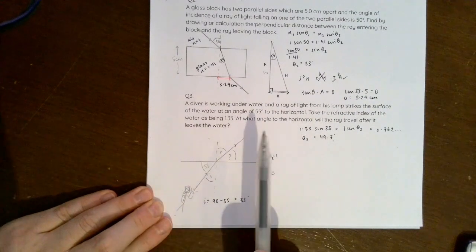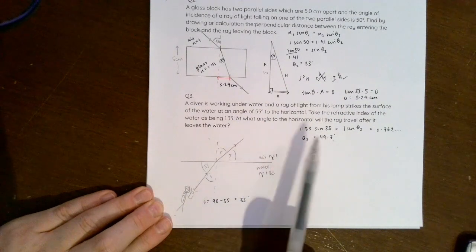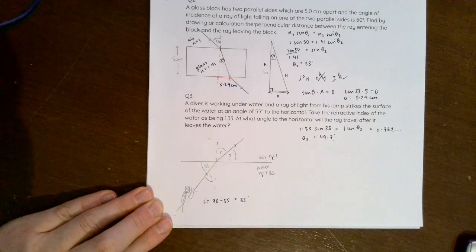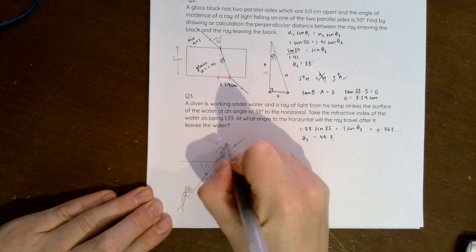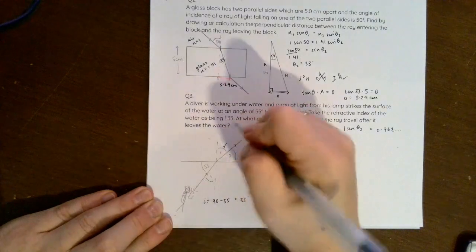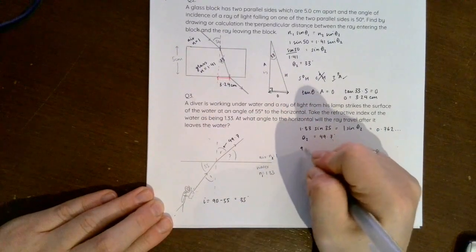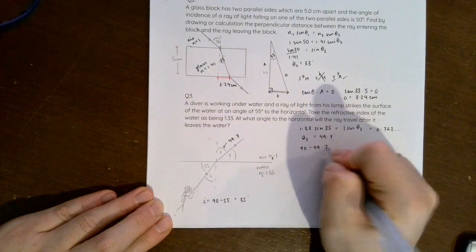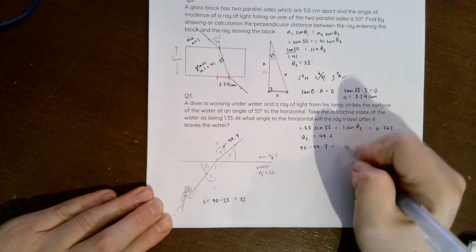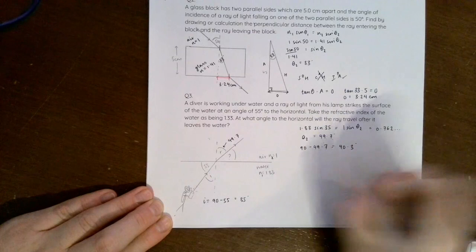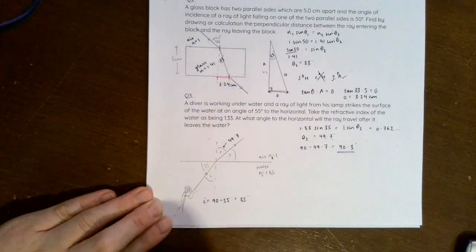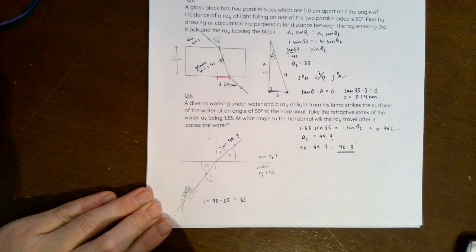But again the question says at what angle to the horizontal will the ray travel after it leaves the water, and I've worked out that this one here is 49.7. So I have to do 90 minus 49.7, and I get 40.3 degrees is the angle it makes with the horizontal. So that's my answer there.